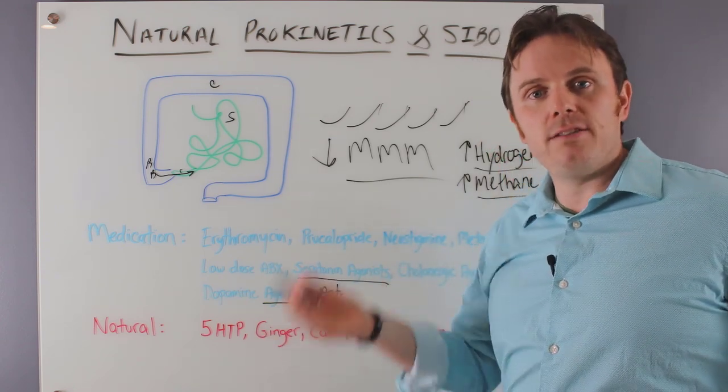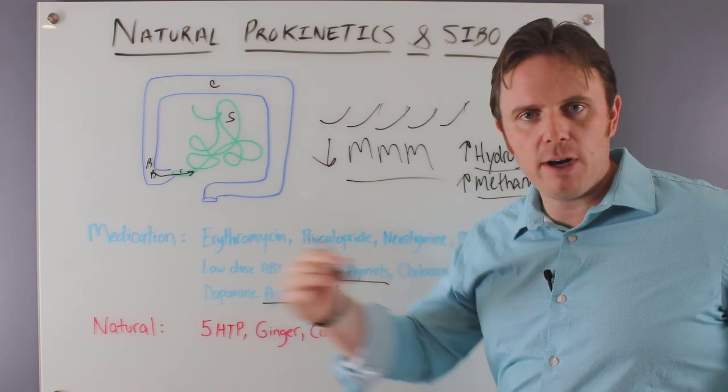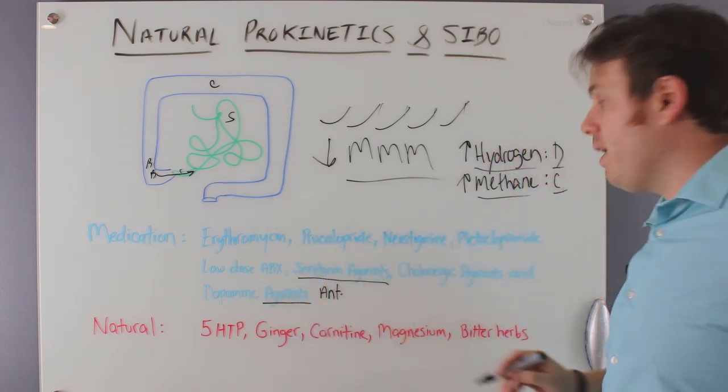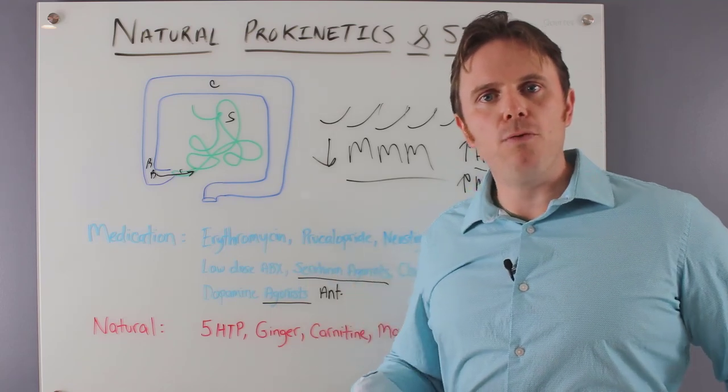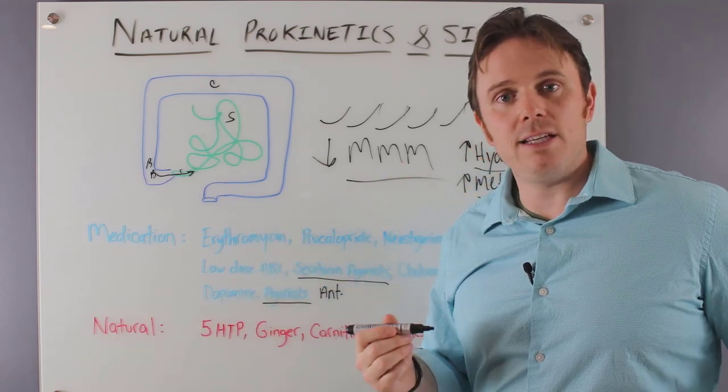Carnitine is very powerful. That stimulates mitochondria and helps that migrating motor complex as well. We also have magnesium. Thousand enzymatic roles in the body. So magnesium is very powerful for helping to move that intestinal debris out.